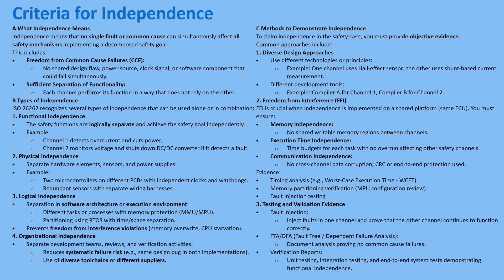Many modern systems use complex ECUs, shared microcontrollers, and shared platforms. If safety channels share hardware, engineers must prove freedom from interference — FFI. If two safety functions run on the same multi-core processor, you must prove they won't interfere: memory independence, meaning one task cannot corrupt the memory space of another, and execution time independence, meaning one task running late can't delay the safety task. You use worst-case execution time — WCET — analysis to prove that even under worst-case load, non-critical tasks will never delay a critical safety task beyond its required timing window, the diagnostic interval.